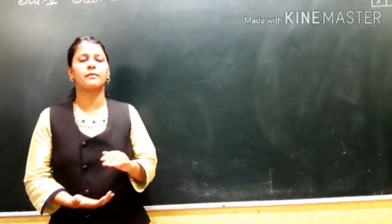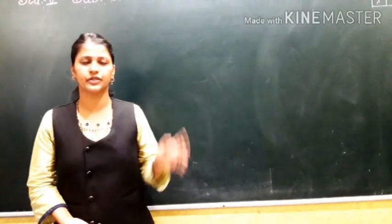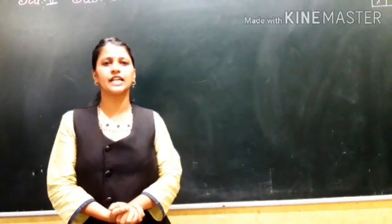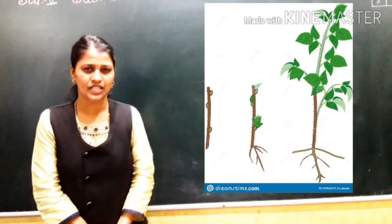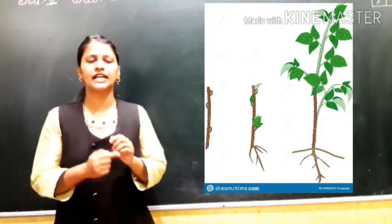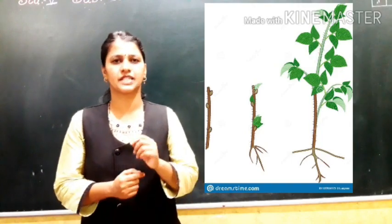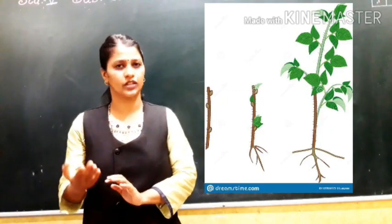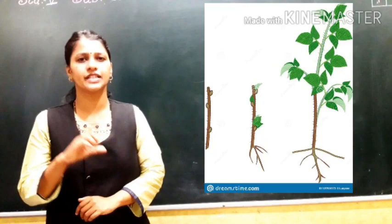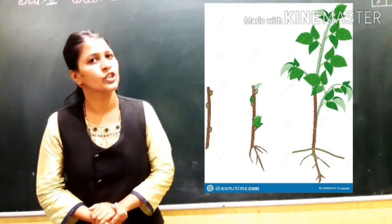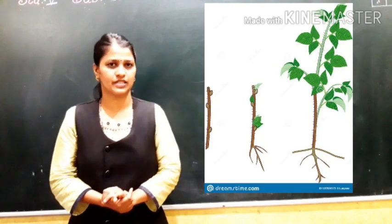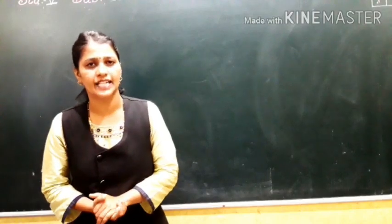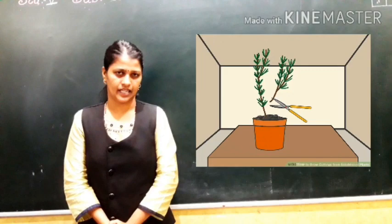We can also grow a plant with the help of the stem. Have you seen the rose plant? If you cut a stem of a rose plant and plant it in another pot, you can see a new plant has been grown. That process is called stem cutting.